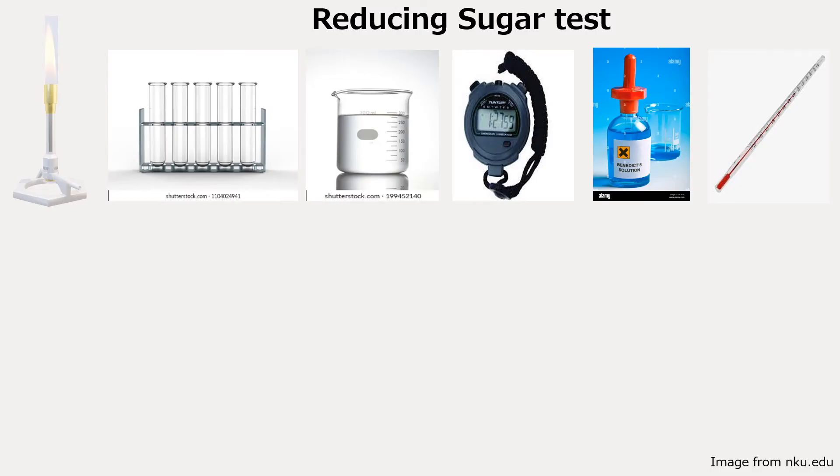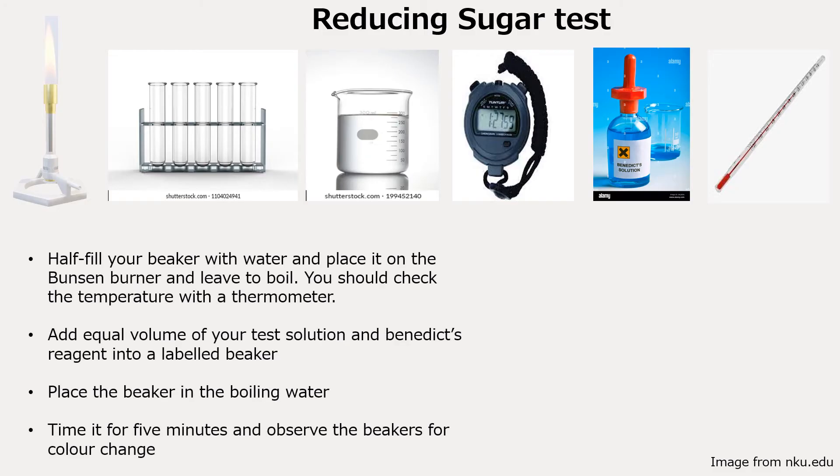For a reducing sugar test, you will need a Bunsen burner, a beaker full of water, a test tube rack, a stopwatch, your Benedict's solution, and a thermometer. All of these are provided, and sometimes if you don't have a Bunsen burner, your school will provide you with a water bath — a large metal container of water at a specific temperature. If you have a Bunsen burner, you have to fill your beaker halfway, put it on the Bunsen burner so that it starts to boil, and don't pour the solution into the beaker.